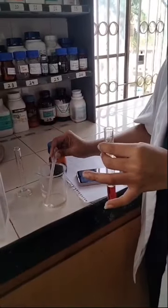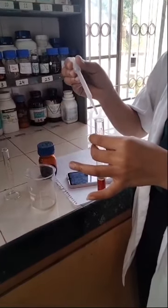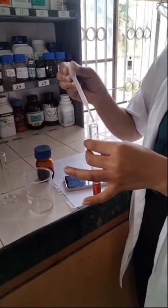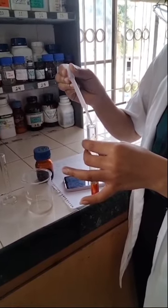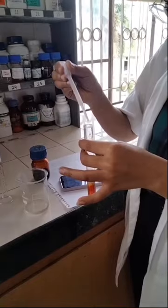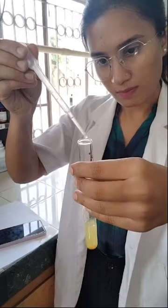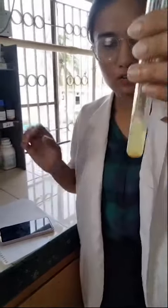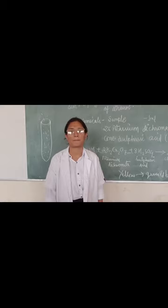Now we will add sodium hydroxide solution drop wise so that we can remove the extra iodine from the test tube. As we can see, the yellow crystals clearly indicate a positive result.